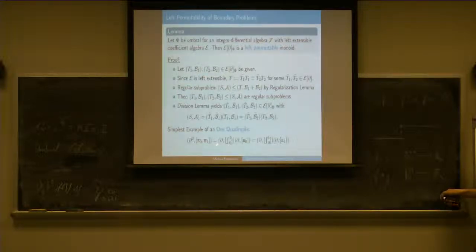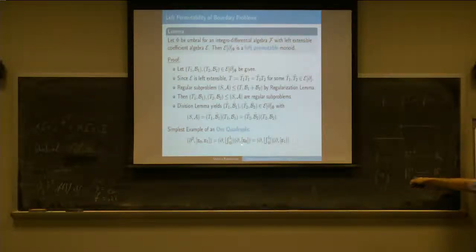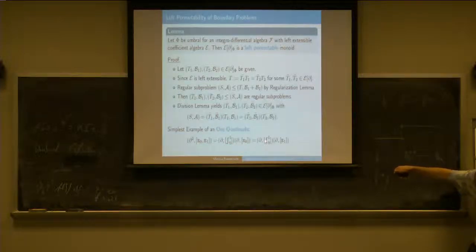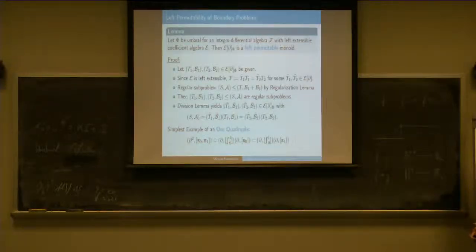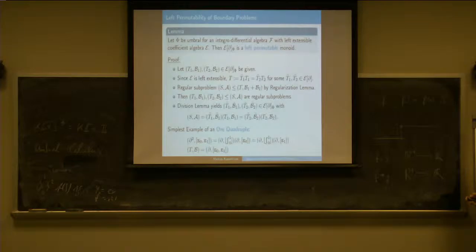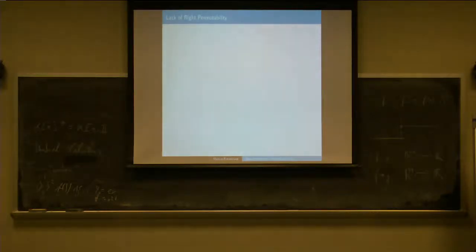Here's a simple example: if I have DE_0 and DE_1, these are two initial value problems, then I need a common factor on the left, and I can use this integral condition, and I get this second-order boundary problem. This is an ORE quadruple, so I always get left permutability.